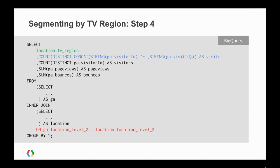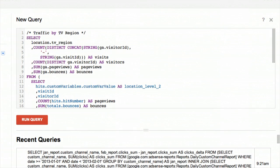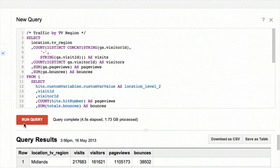Once we've got these two queries together, we do a simple join. At the bottom in red, you can see we're joining on location level 2 from both tables, and then pulling out the TV region from our lookup table. In blue, you can see that it's only at this final stage that we're actually aggregating. If we switch over to BigQuery and run that — again, this is running through millions of sessions and it only takes 4.5 seconds.